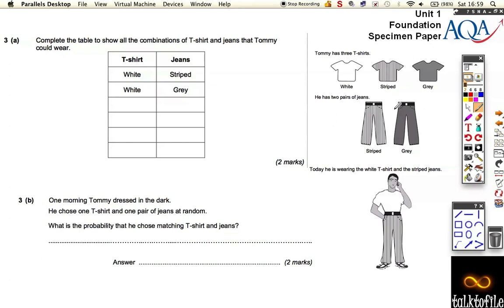Now what we need to do is complete the table to show all the combinations of all the clothes he wears. If he has a white t-shirt he can either wear the striped or the grey jeans. Let's work logically.